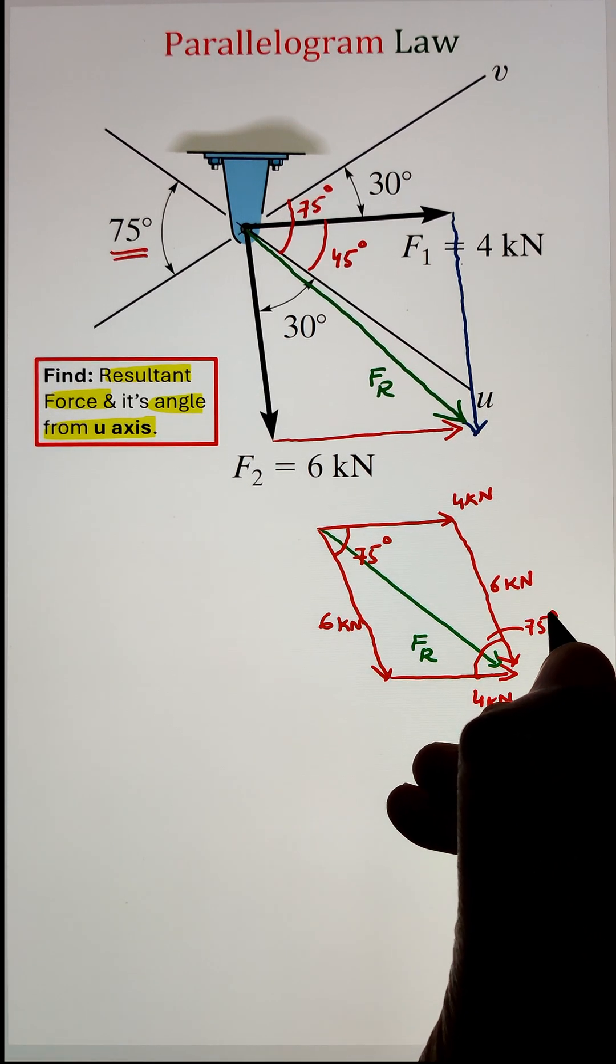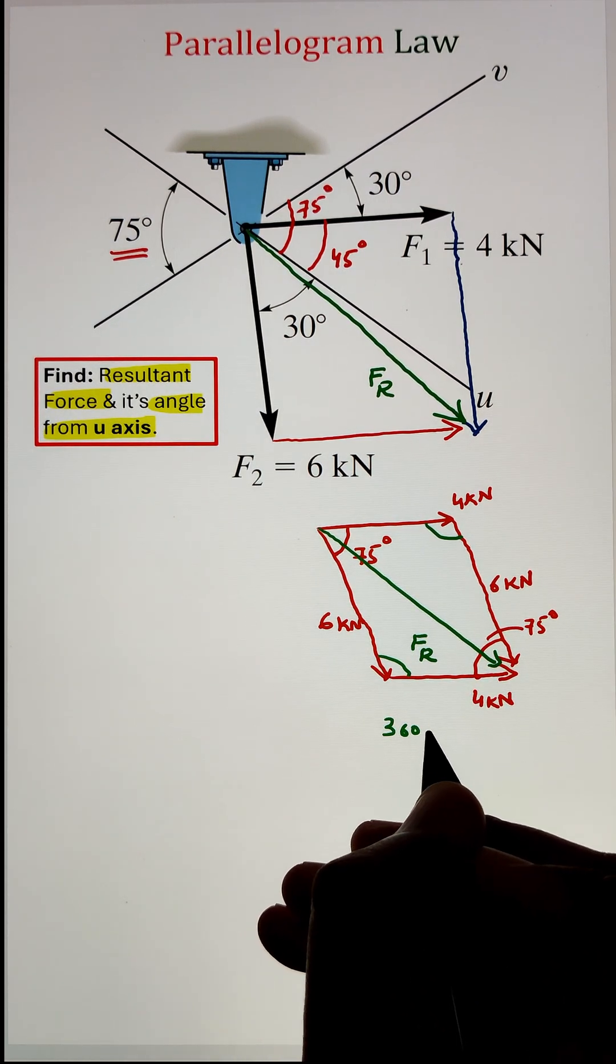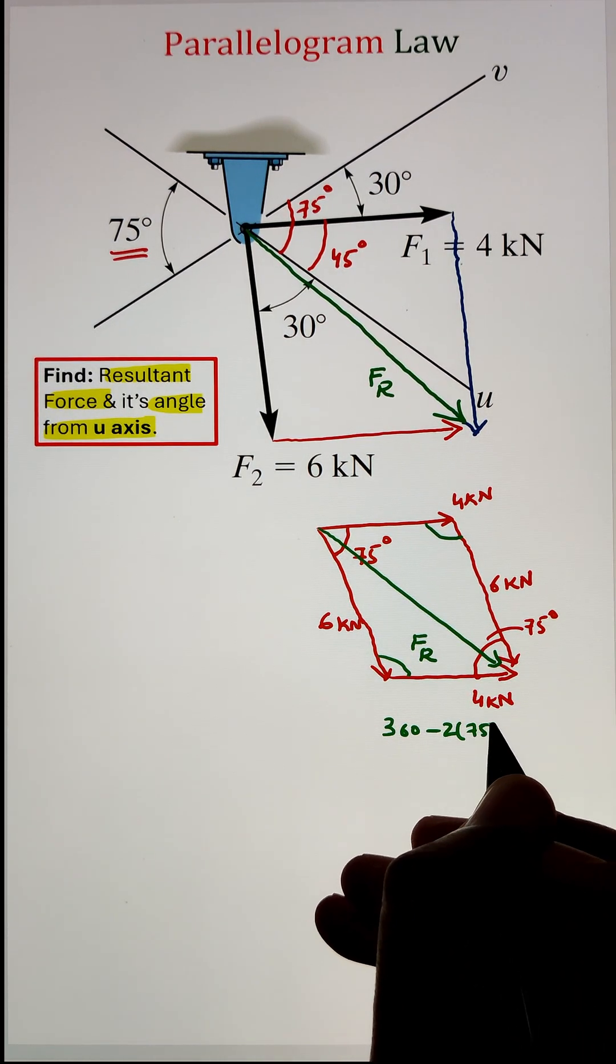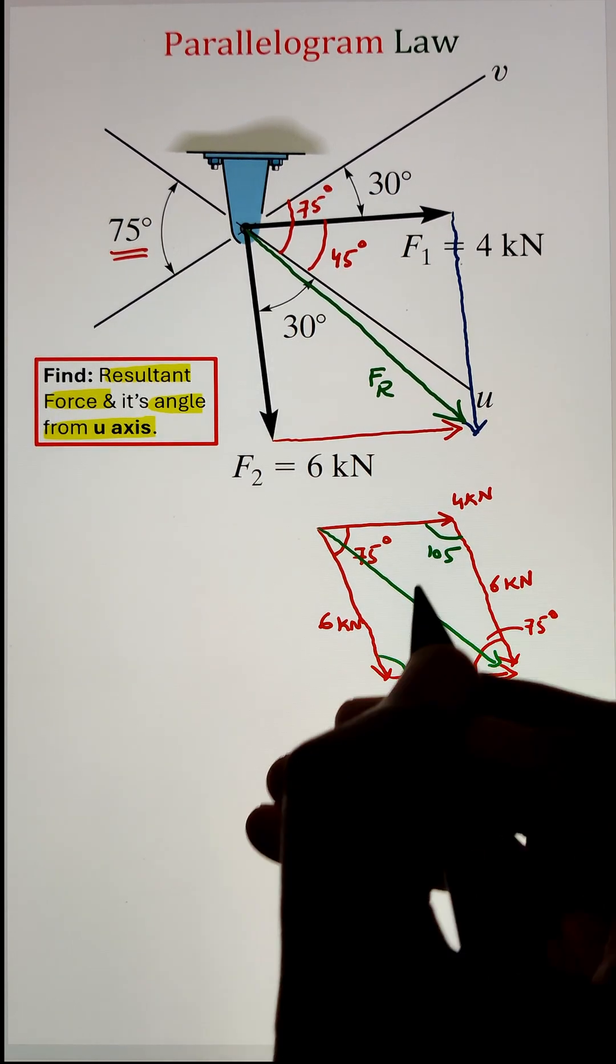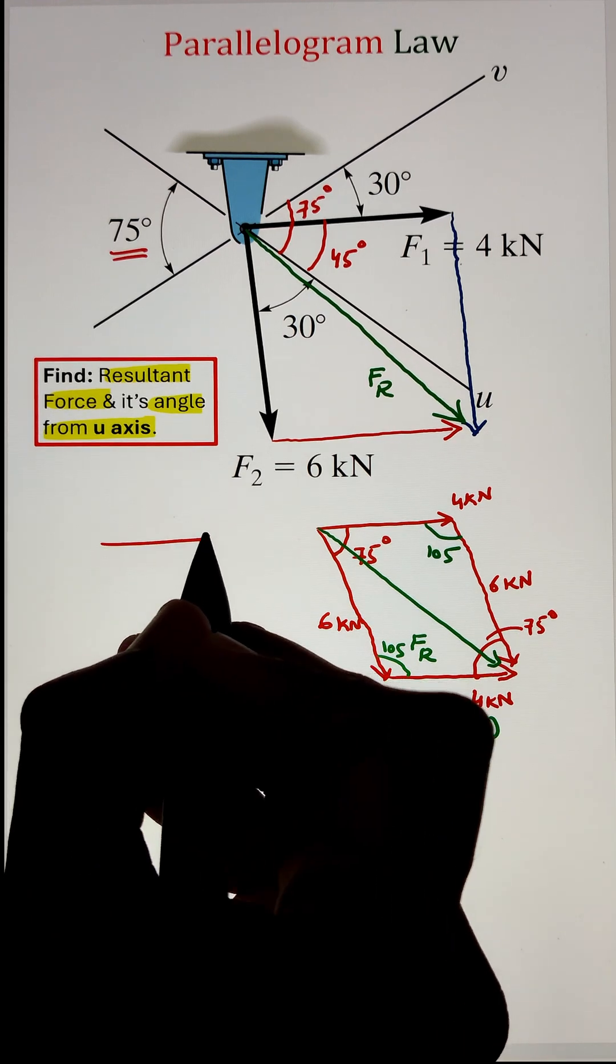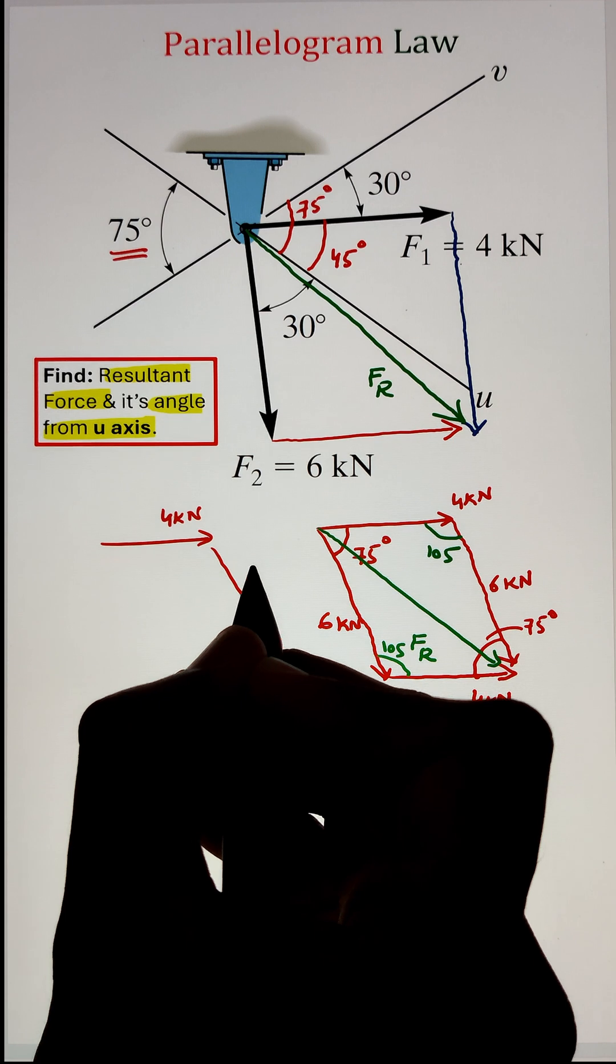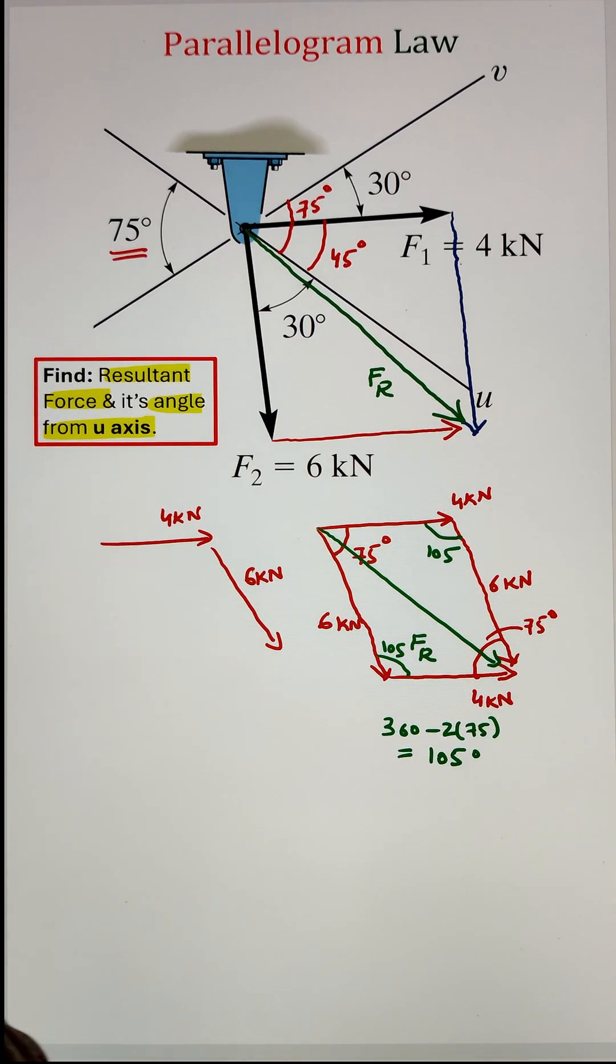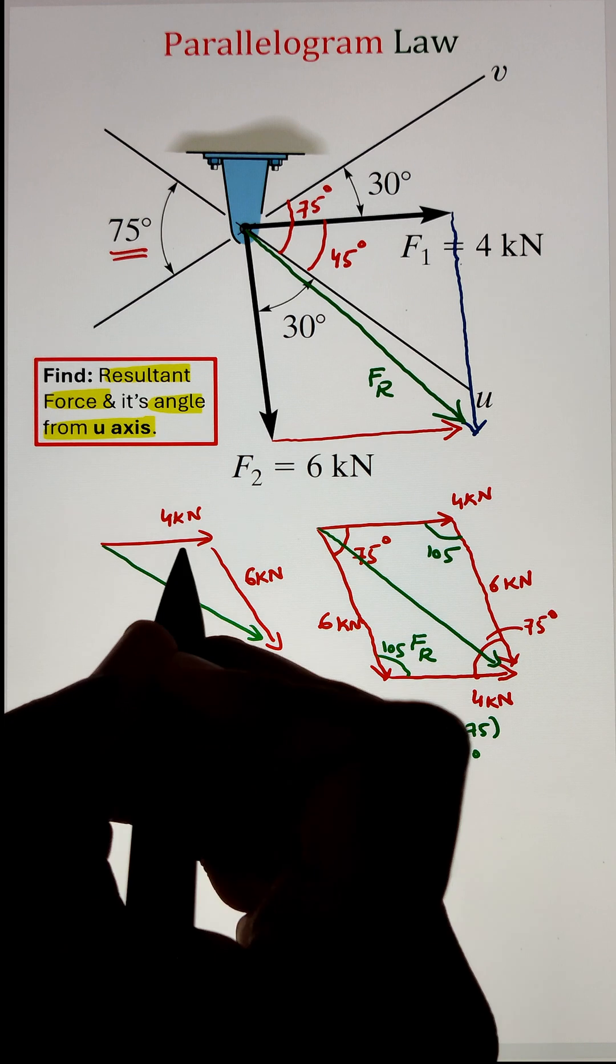So, in this case, since we know the two forces of 4 kN and 6 kN and the angle between them is 105, we can go ahead and apply our cosine law to solve for the resultant force. That is the square root of our first force squared plus the second force squared minus two times the two forces and the cosine of angle between them. The result is coming as 8.03 kN.